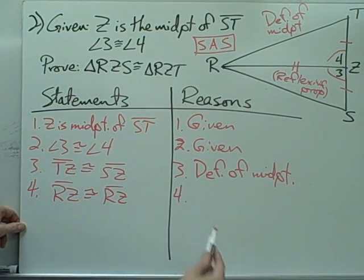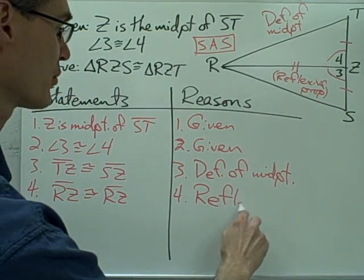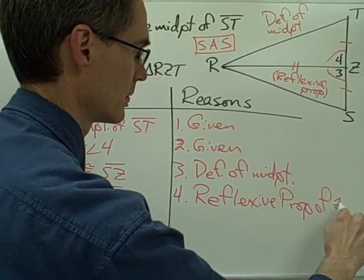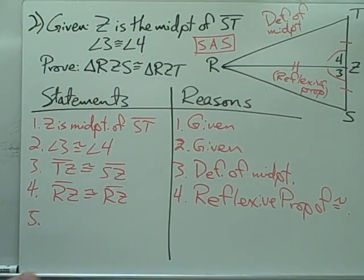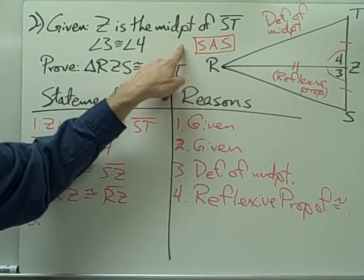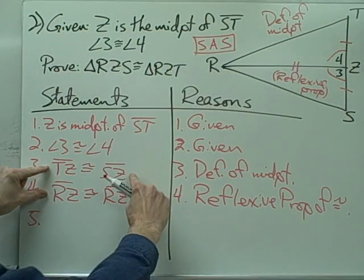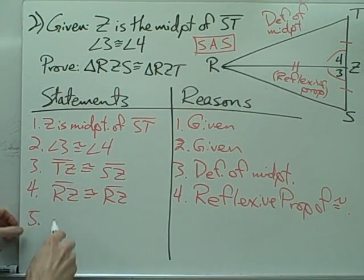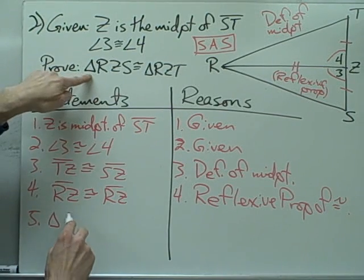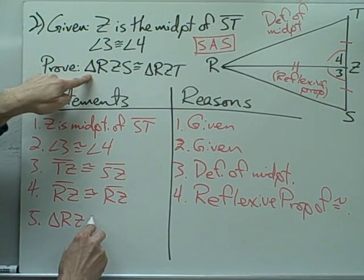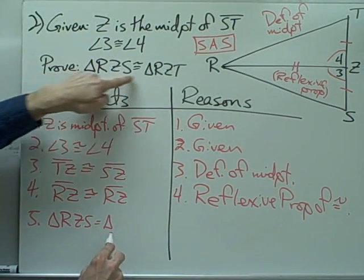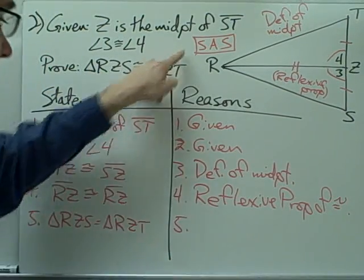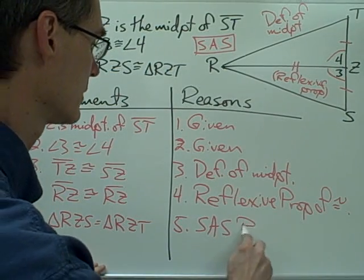The reason is the reflexive property of congruence. And now I have all the information I need to use my side-angle-side postulate — two sides and the included angle of one triangle congruent to two sides and the included angle of another triangle. So I can say triangle RZS is congruent to triangle RZT by the side-angle-side postulate.